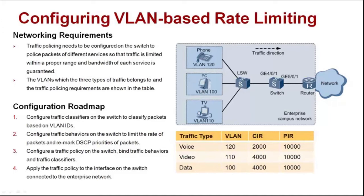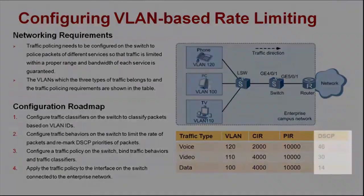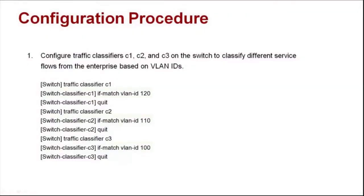To meet the requirements, let's configure VLAN-based rate limiting. There are four steps in total. Step 1: configure three traffic classifiers on the switch to classify different service flows from the enterprise based on VLAN IDs.